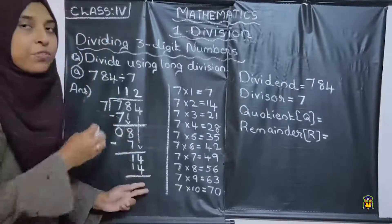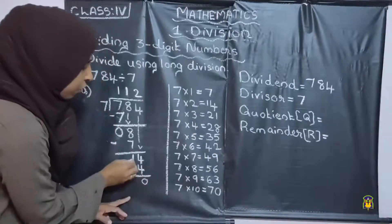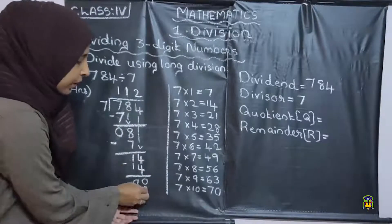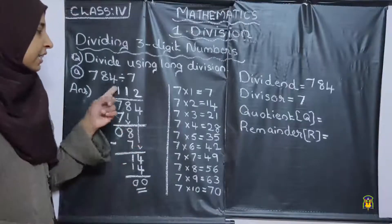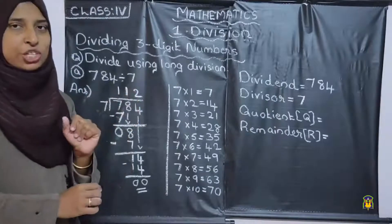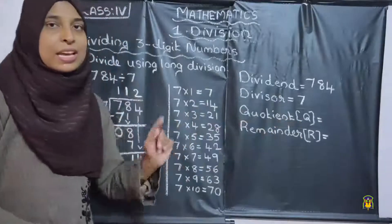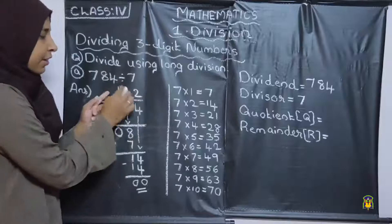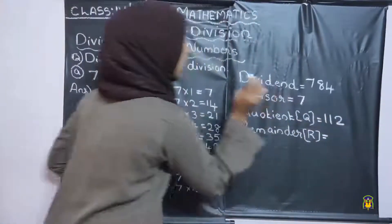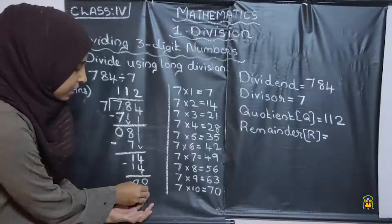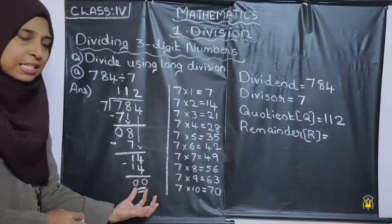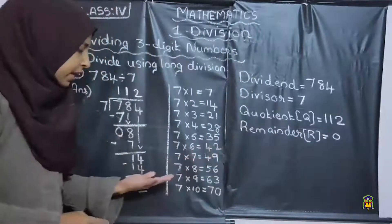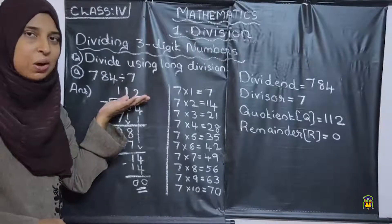Next step, we want to subtract. What is 4 minus 4? It is 0. 1 minus 1? It is also 0. So here we get 0 and there is no other number to bring down, so we can stop here. The number we are getting above is the answer in division — the answer in division is called the quotient. The quotient is 112. The leftover number is called the remainder; here we get 0 as the remainder.